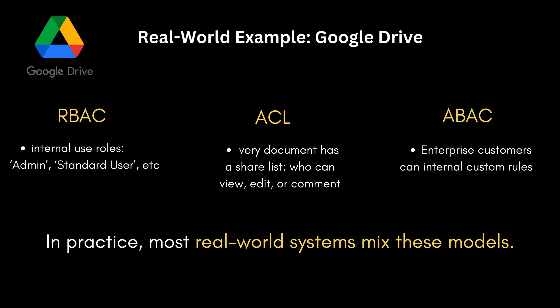Let's see how these models work together in Google Drive. First, RBAC: Google uses roles like admin or standard user to manage what you can do within your account. Then ACLs: every document has its own access control list — that share button where you grant individuals view, edit, or comment access. Finally, ABAC: enterprise customers can set rules like preventing any document labeled 'confidential' from being shared outside the company domain. Real-world systems aren't just one model — they mix all of these to create a security framework that is both powerful and practical.